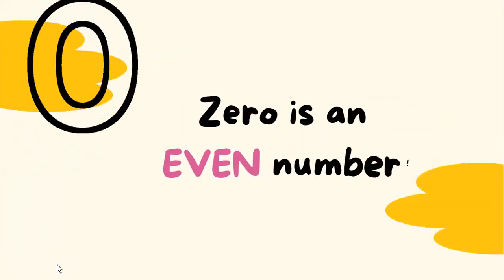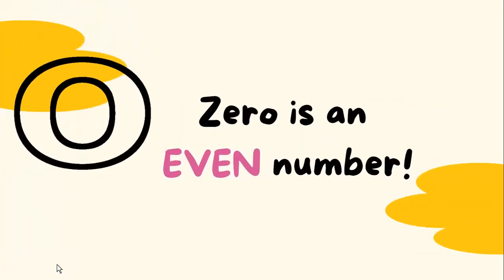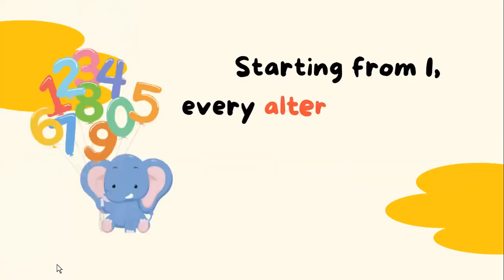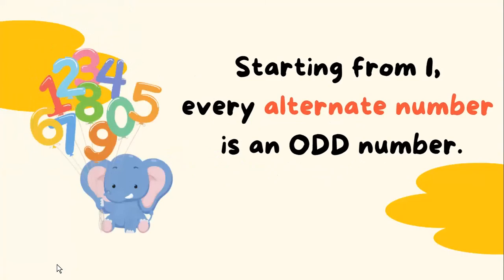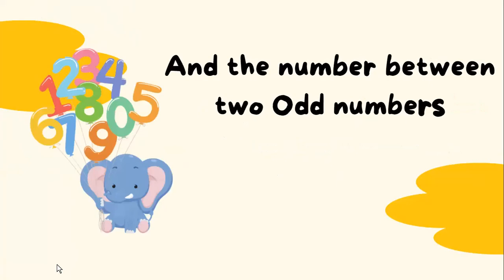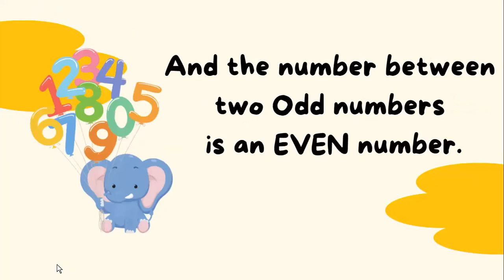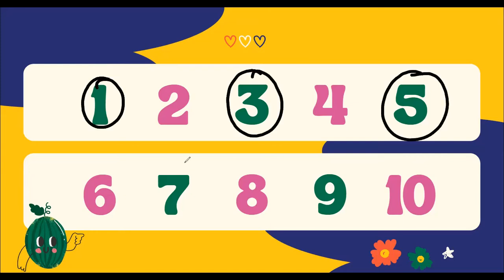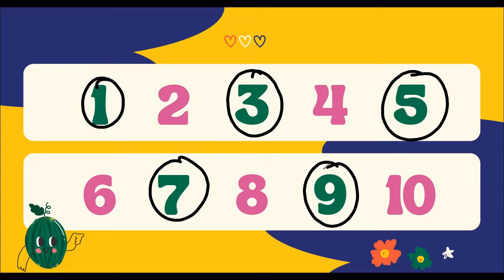It's time for fun facts! Did you know that zero is an even number? Starting from one, every alternate number is an odd number, and the number between two odd numbers is an even number. Therefore, one, three, five, seven, and nine are odd numbers, and two, four, six, eight, and ten are even numbers.